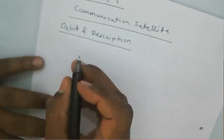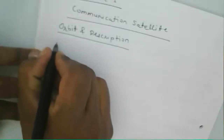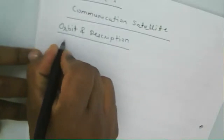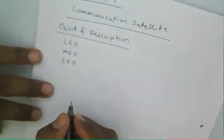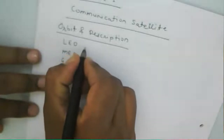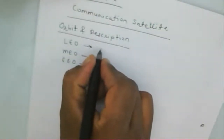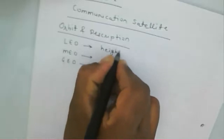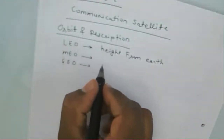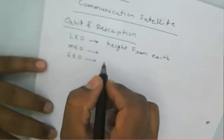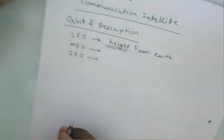Now we consider the different types of orbits. Orbit types include the Low Earth Orbit, the Medium Earth Orbit, and the Geostationary orbit. These orbits are defined based on their height from the Earth.